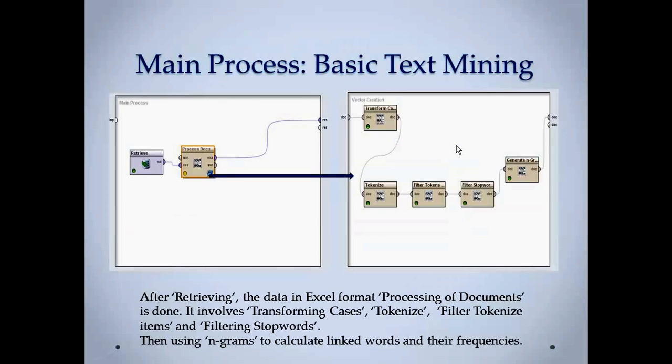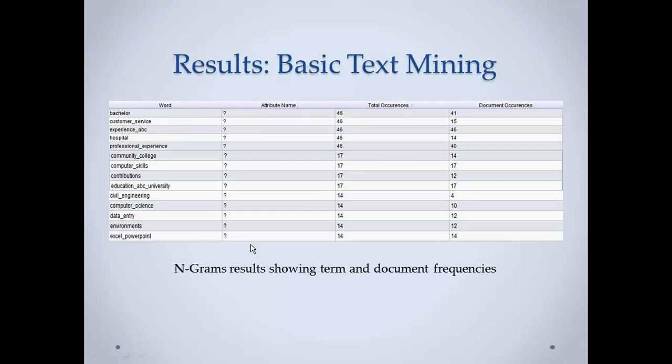The main process in another basic text mining is retrieving data, process documents to data here, and then transforming cases as it goes like this: tokenizing, filter tokens, filter stopwatch, and then generating N-grams. What N-grams actually do is that it calculates the linked words and their frequencies in the documents. If you are searching for people with computer skills, it has occurred 17 times computer and skills and in 17 documents. It means that 17 documents have people with computer skills. Same goes with customer service. It has occurred 46 times and they are in 15 documents.